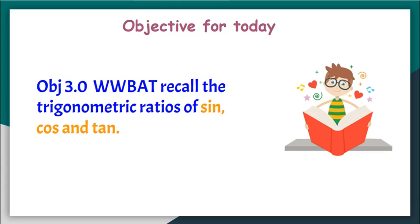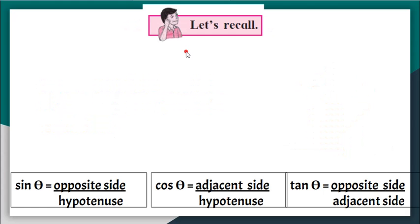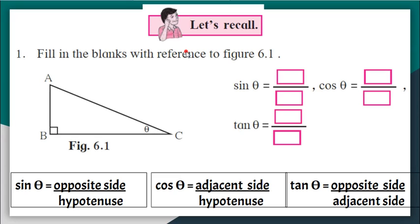So let's begin by some recall questions given in our textbook. Now you know that sin theta is opposite side by hypotenuse, cos theta is adjacent side by hypotenuse and tan theta is opposite side by adjacent side and all these happens in a right angled triangle.